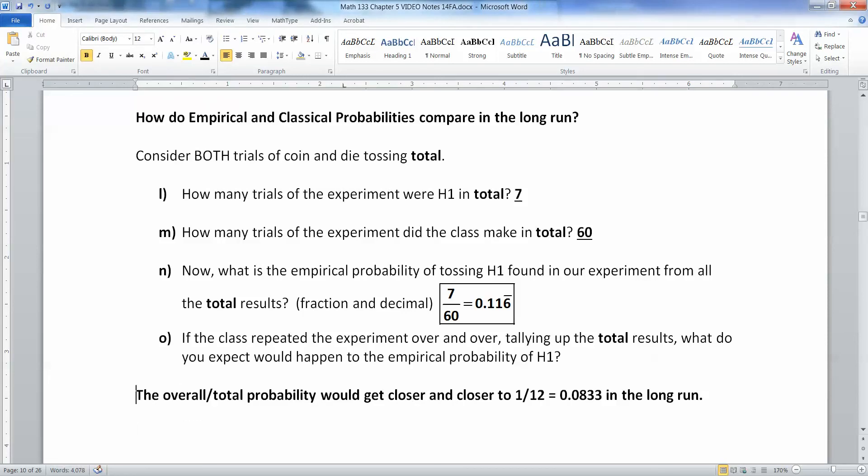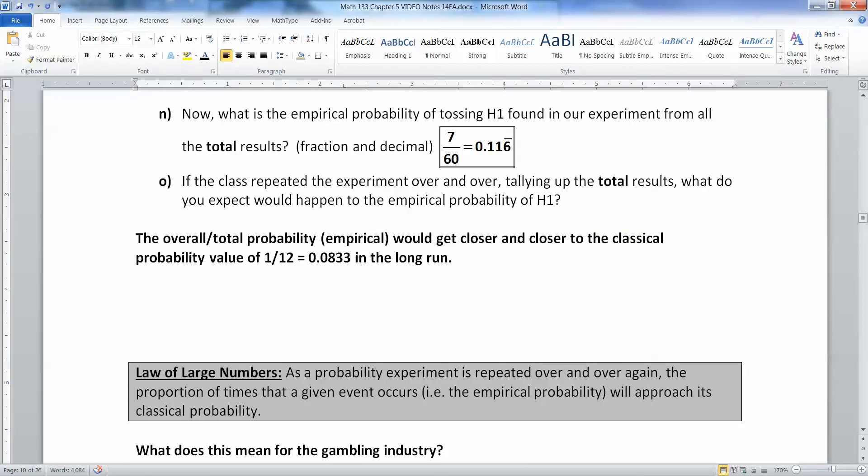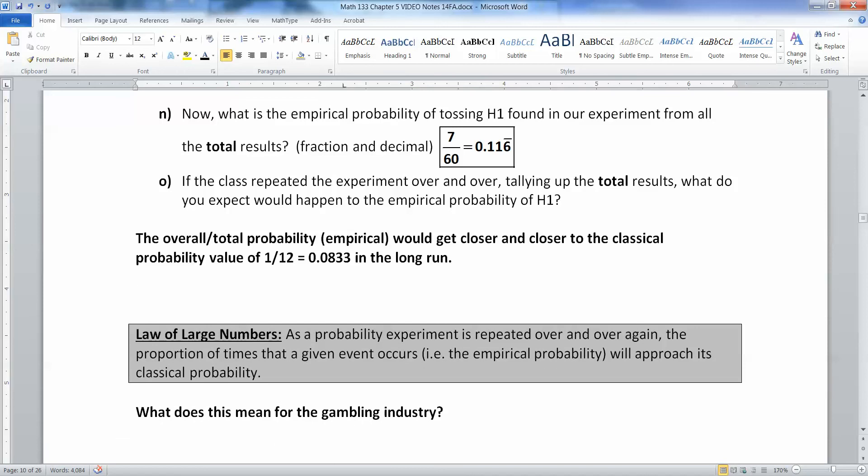Well, I would expect it to get closer and closer to what we actually really expect it to be, which is 0.083, which is the classical probability. So the overall total probability, which is empirical, would get closer and closer to the classical probability value of 1 out of 12, which would be 0.083 repeating.